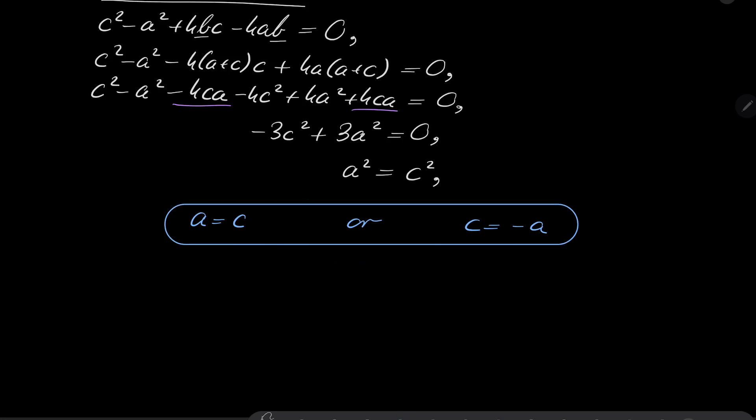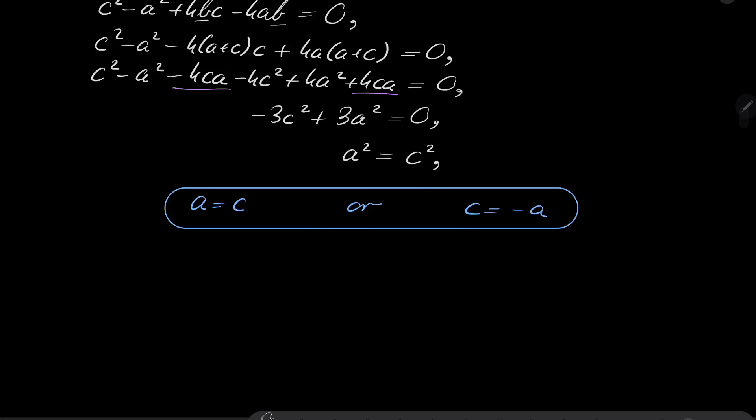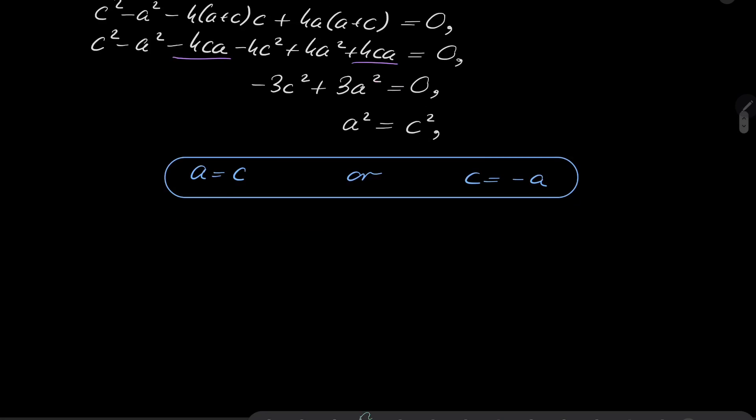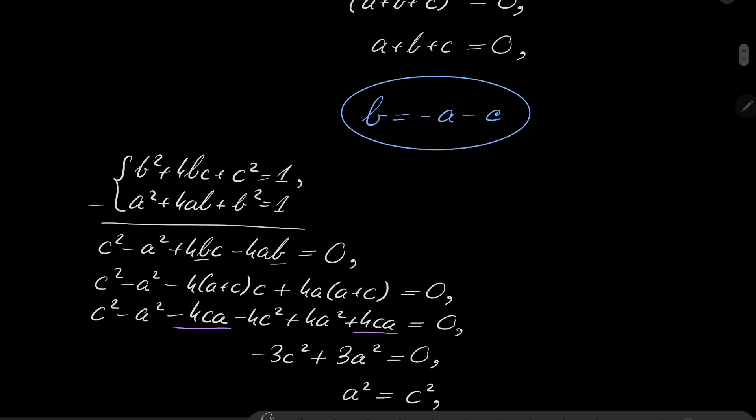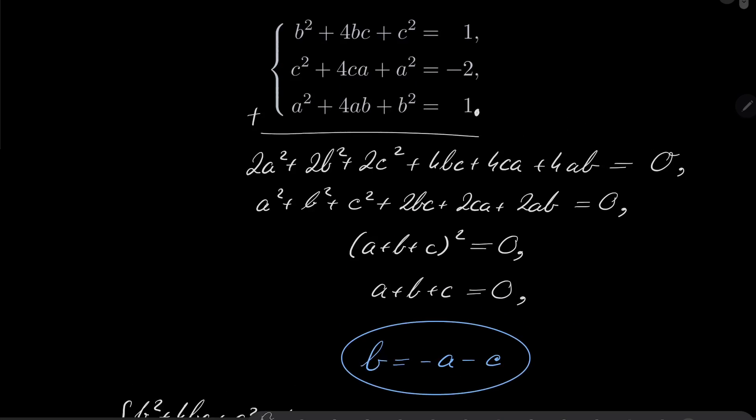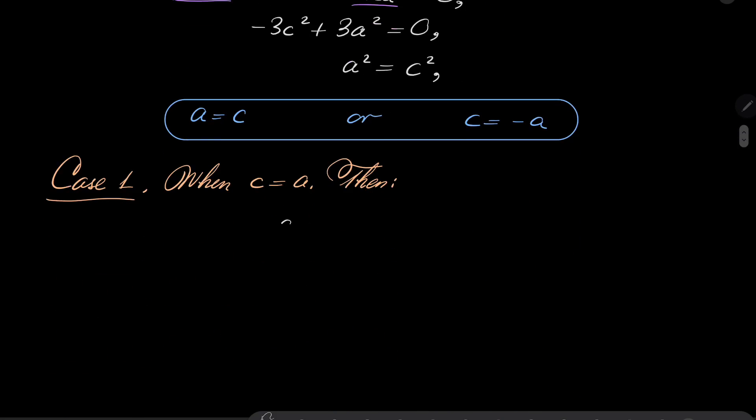And let's investigate both of these possibilities. So first case, case number one. Case number one is when c = a. Notice that then, now it's time to use the second equation, which says that c² + 4ca + a² should be equal -2.